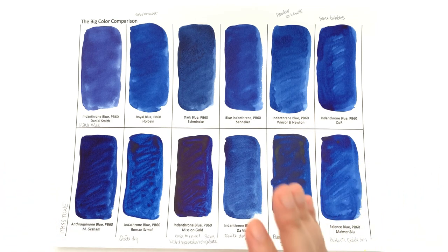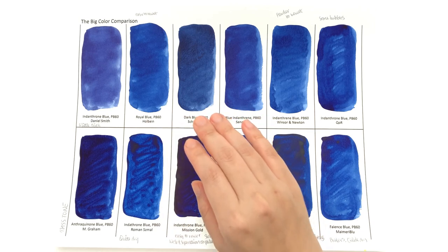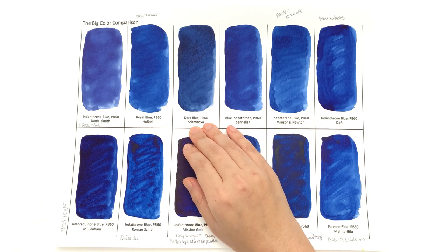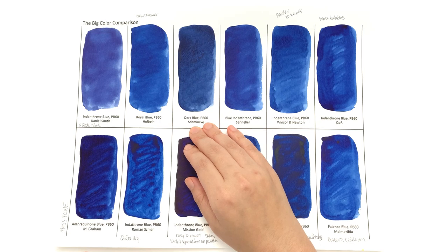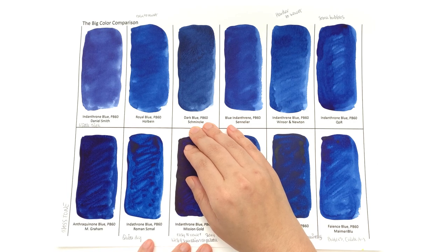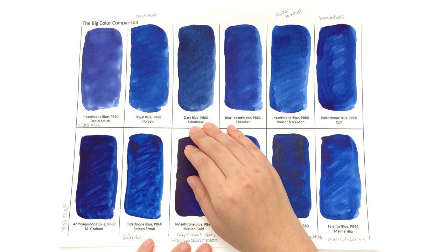One thing I want to know before I get started is Schmincke's name on their catalog is this Dark Blue, and Indigo is also listed separately. Now my tube has Dark Blue Indigo on it, so I'm not questioning which one this is. It is definitely PB60 though, so we know at least that if you do have a tube of either Dark Blue or Indigo or Dark Blue Indigo, please let me know what your tube says the color name is.